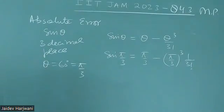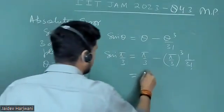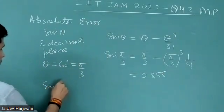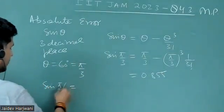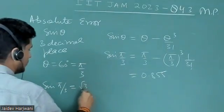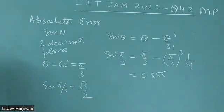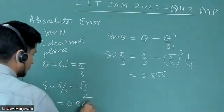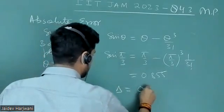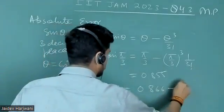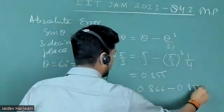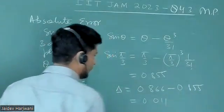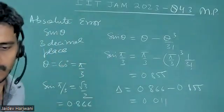This value when you calculate it will be 0.855. But actually, sine pi by 3, that means sine 60 degrees, is root 3 by 2, and this value is 0.866. So when you calculate the error, it will become 0.866 minus 0.855, which is equal to 0.011. This is the solution.